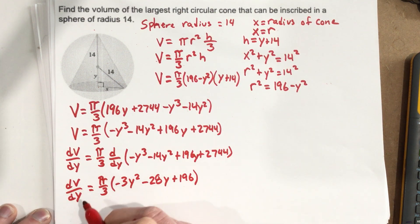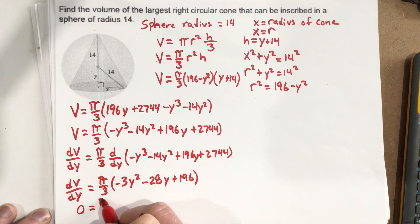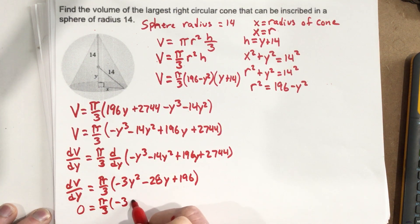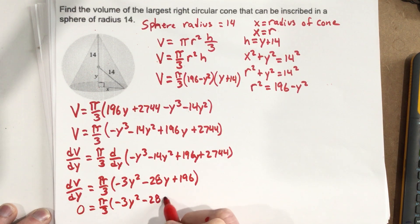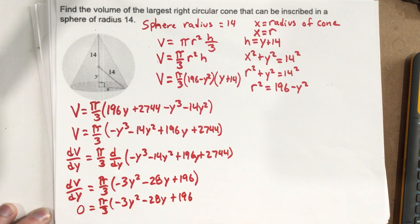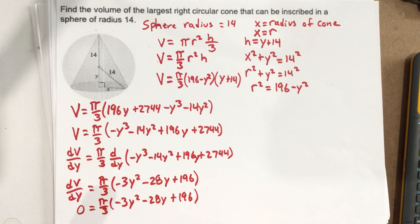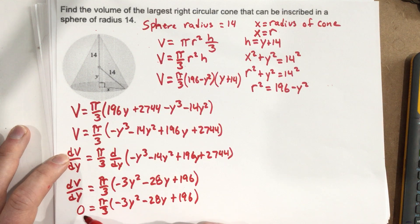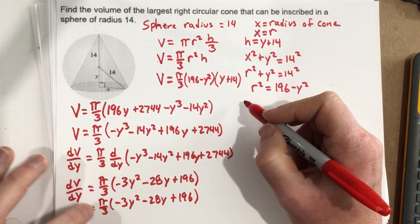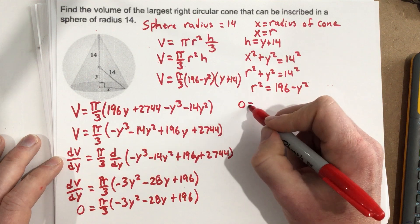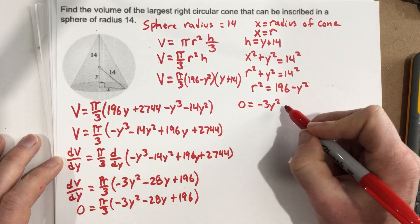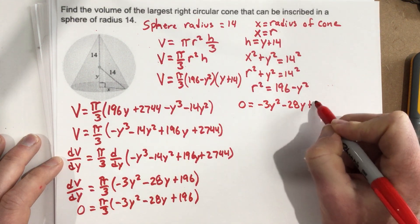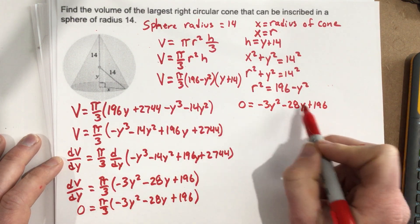Setting the derivative equal to 0: 0 = (π/3)(−3y² − 28y + 196). Dividing both sides by π/3 gives 0 = −3y² − 28y + 196. I have a quadratic equal to 0, and it looks like it's not going to factor nicely, so I'll use the quadratic formula.